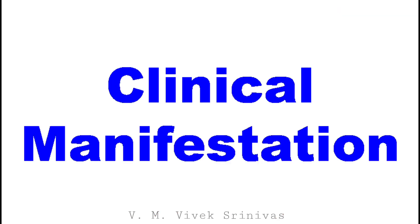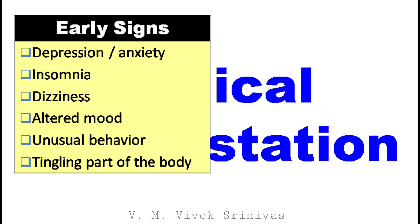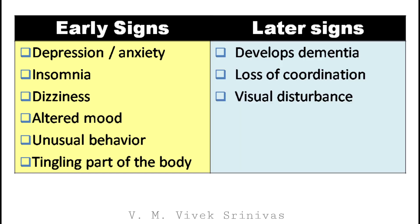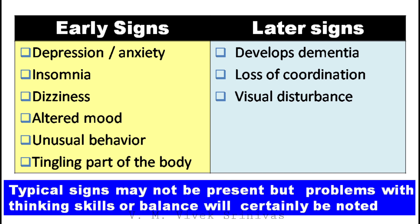Clinical manifestations: Early signs include depression, anxiety, insomnia, dizziness, altered mood, unusual behavior, and tingling parts of the body. Later signs such as dementia, loss of coordination, and visual disturbances are observed. Typical signs may not always be present, but problems with thinking skills or balance will certainly be noted.